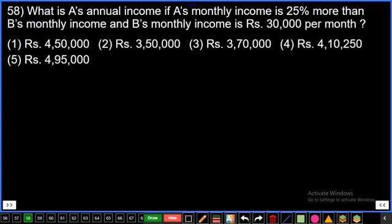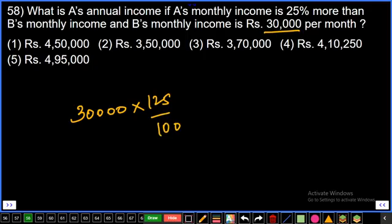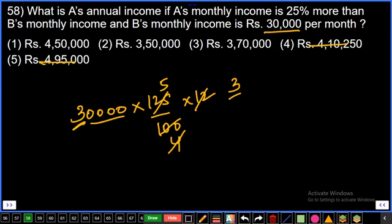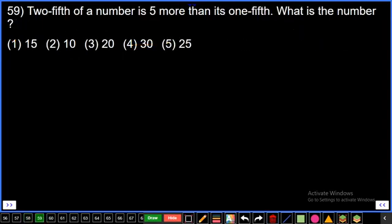Question number 58: What is A's annual income if A's monthly income is 25 percent more than B's monthly income, and B's monthly income is rupees 30,000 per month? A's annual income means A's monthly income into 12. B's monthly income is 30,000, so 25 percent more means multiply by 125 by 100. A's annual income is into 12. Here 25 five times, 25 four times. Observe: four zeros, cancel. Answer has four zeros. Three into three is nine, so answer is nine multiple.